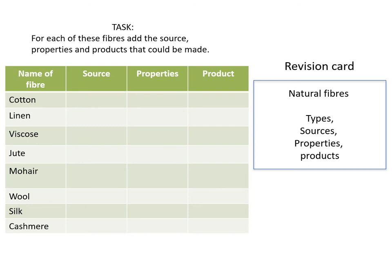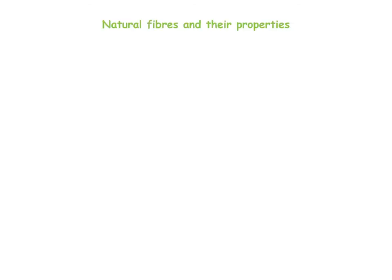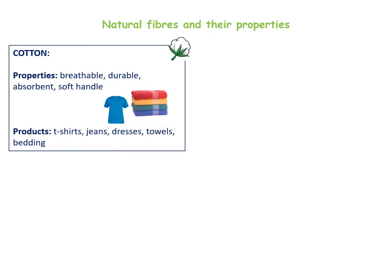I am now going to move on to fabric properties. You can either listen to the tutorial or complete it as a task — put it onto a revision card or do it as a table, including the sources of the fabrics, possible properties and possible products that could be made from those fabrics. Cotton is a popular fabric, mainly because it is breathable, durable, absorbent and soft to handle.